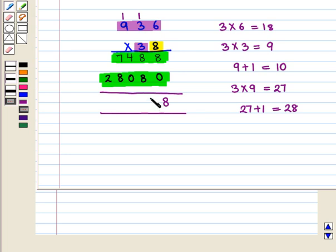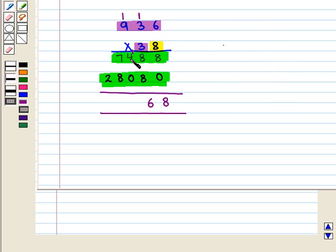So we write 6 and place 1 above hundreds. Now 1 plus 4 plus 0 is 5, so we write 5.